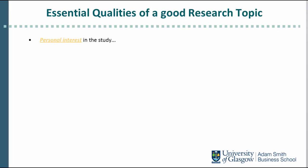There are four qualities in total, and they start with a personal interest in the study. It is very important that you feel motivated to conduct research in your chosen topic, and it's even more important that you sustain this motivation for about six months — that's how long it takes from the moment you formulate that research topic in writing in this course to the time you submit your dissertation.